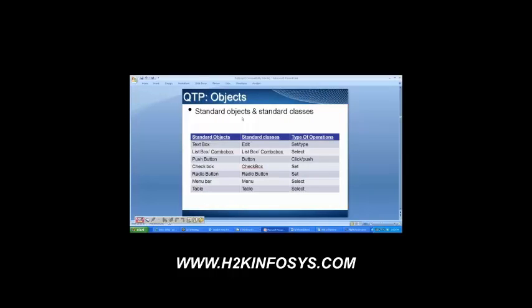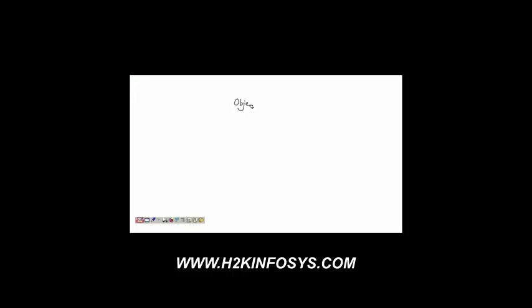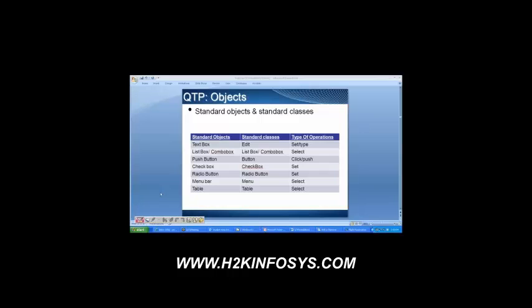So all the standard objects are going to belong to a class. You take any object — it is going to belong to a class. For example, consider yourself: to which class do you belong? You are in the group of participants — you are a QA participant. Any BA course student belongs to the BA participant list. Similarly, all objects belong to a particular class — a particular group. Is it clear, the difference between an object and a class?